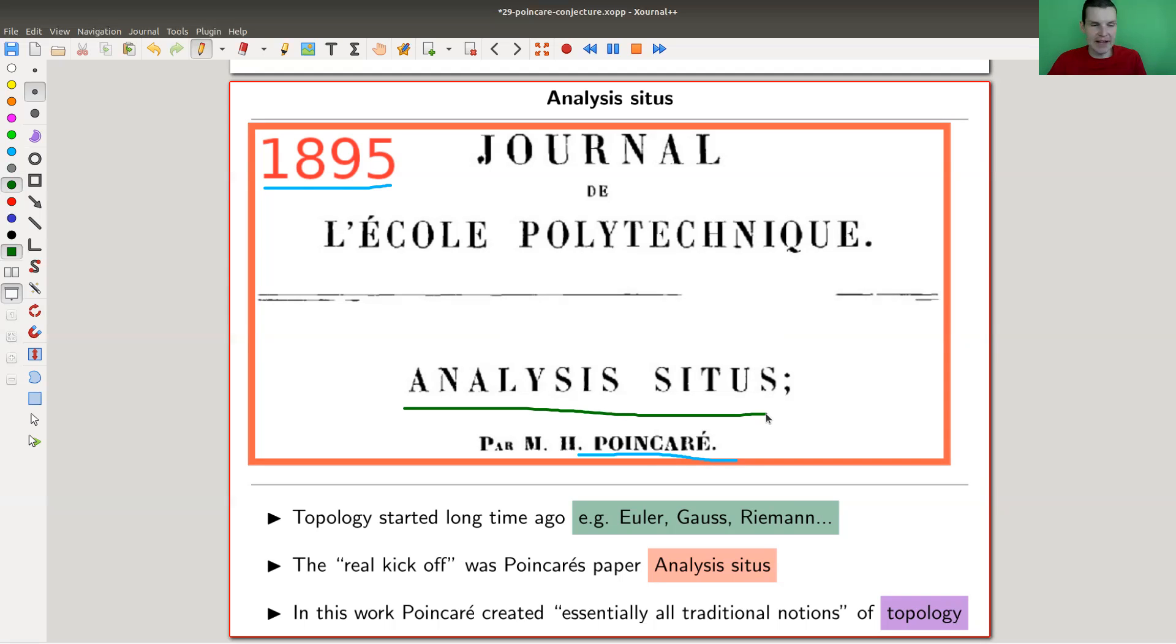What Poincaré does is introduce all the standard notions of traditional topology, which is really impressive. Obviously there was some work before by giants of the field - Euler, Gauss on manifolds and braids, Riemann, and many more names I'm skipping.